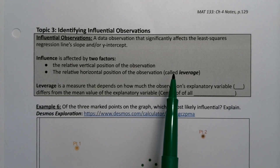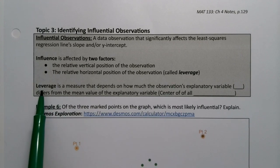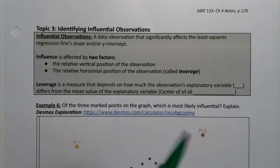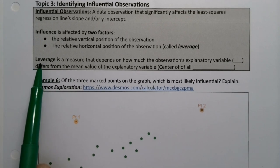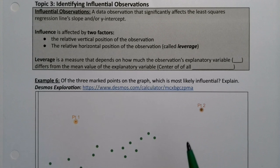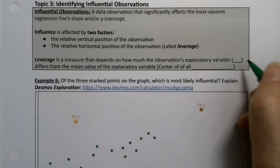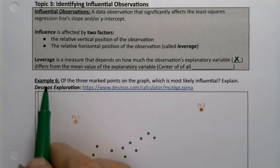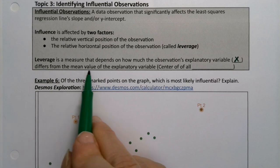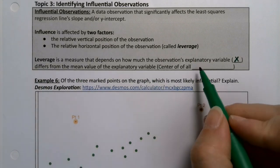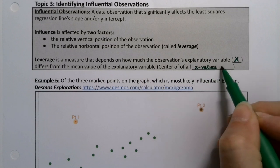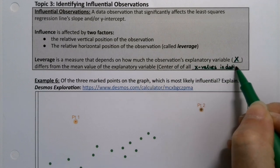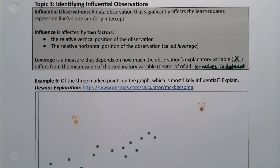I realized in the fall of 2020 I forgot to put in the definition of leverage, so I'm adding this in — it will be in the notes for future semesters, but you might want to write it down. Leverage is a measure that depends on how much the observation's explanatory variable — its x value — differs from the mean value of all the explanatory variables, in other words, the center of all x values in the data set.